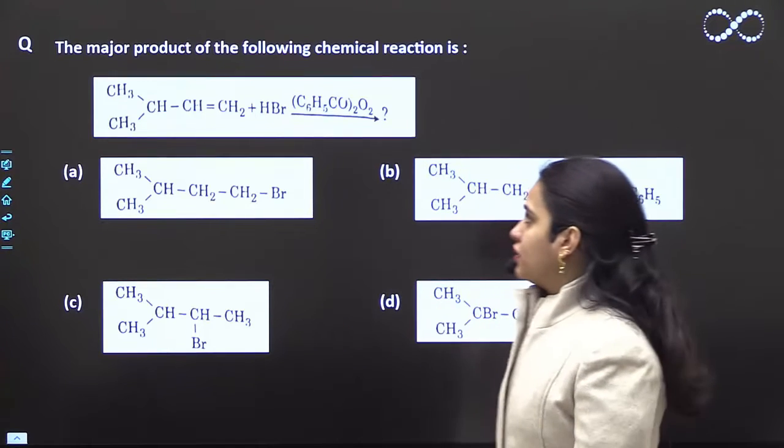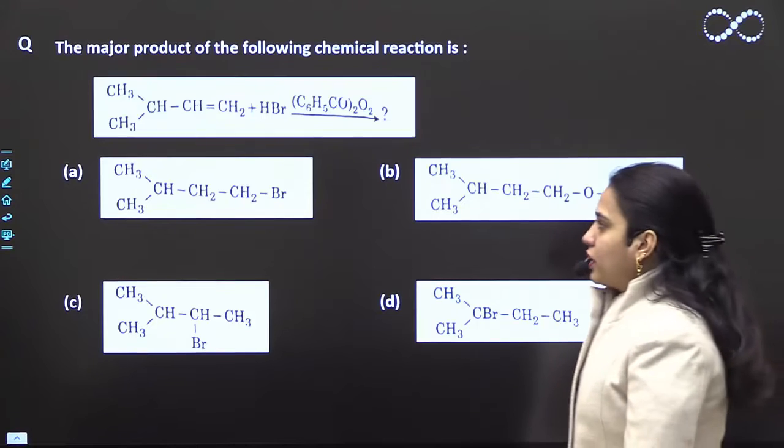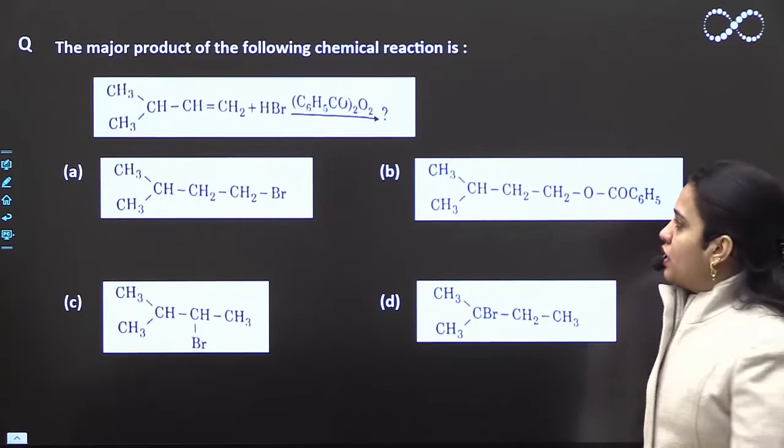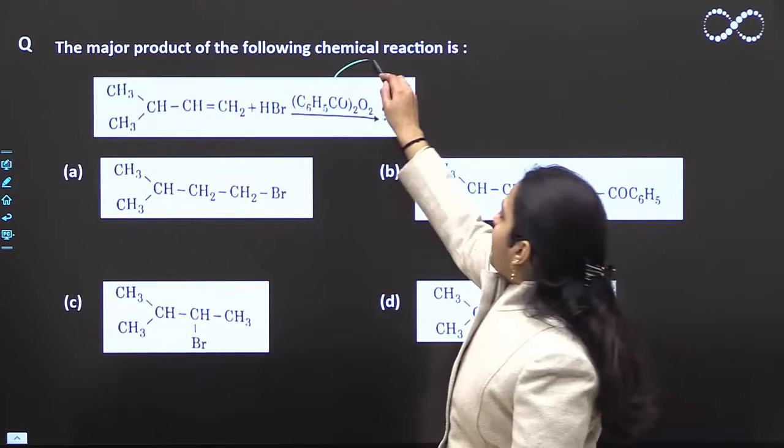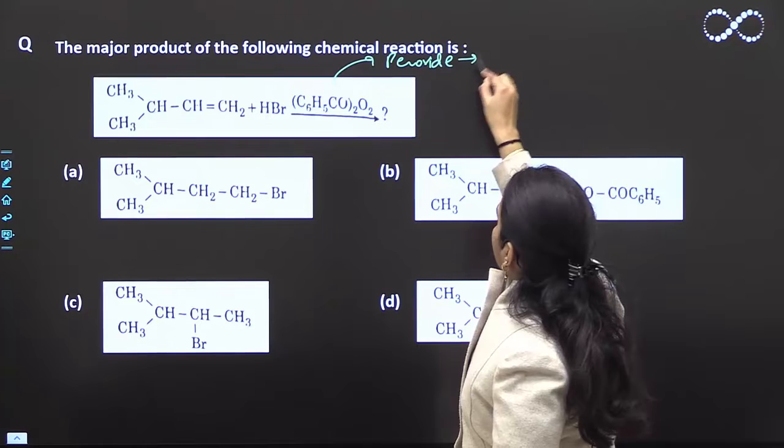Hello students, in this question you are given the major product of the following chemical reaction. An alkene reaction with HBr, i.e. addition. But the point is that this reaction is happening in the presence of a peroxide, and if it is happening in the presence of a peroxide...